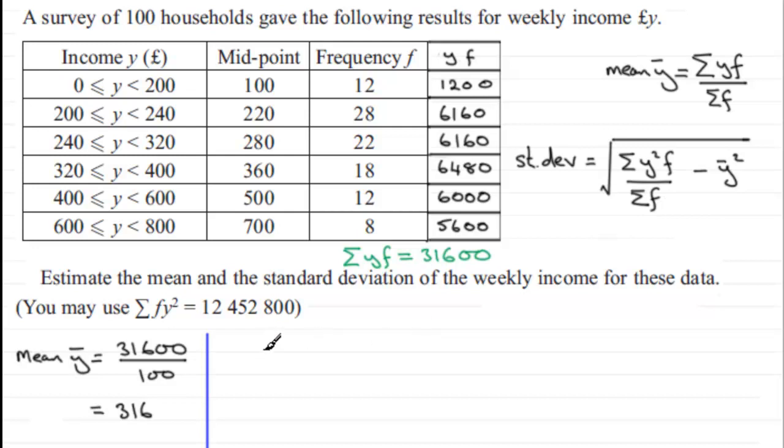So when we're doing this particular part, the standard deviation is going to equal the square root of, and what do we got? Well, Sigma Y squared F, we were told, or Sigma FY squared, is going to give us 12 million 452,800.